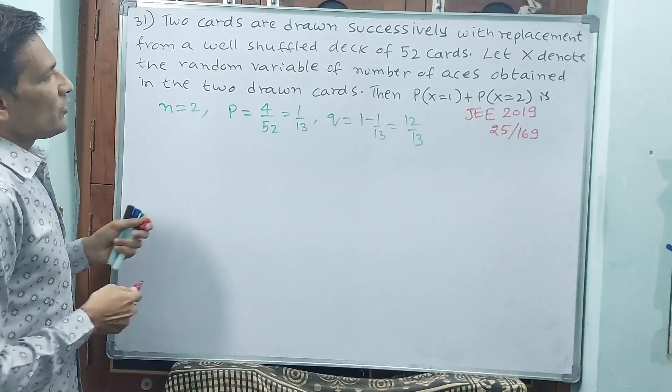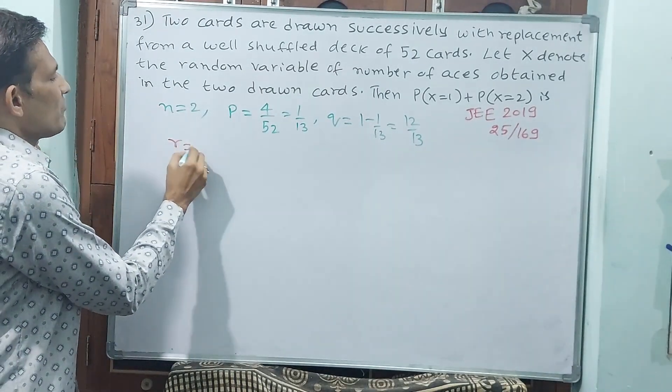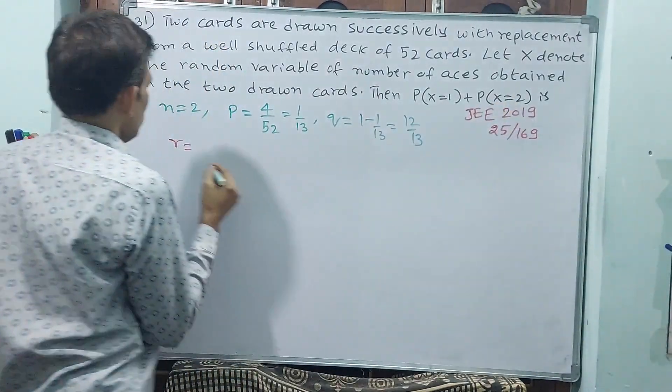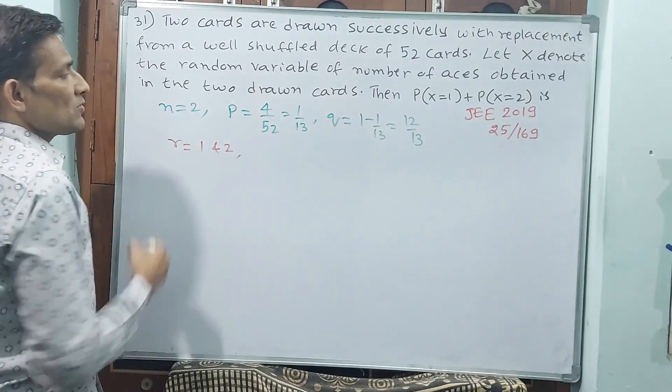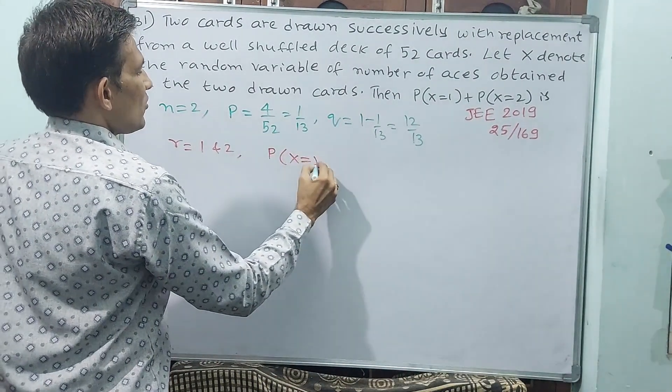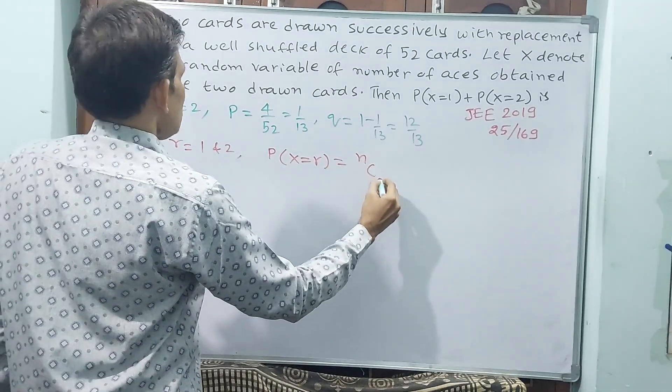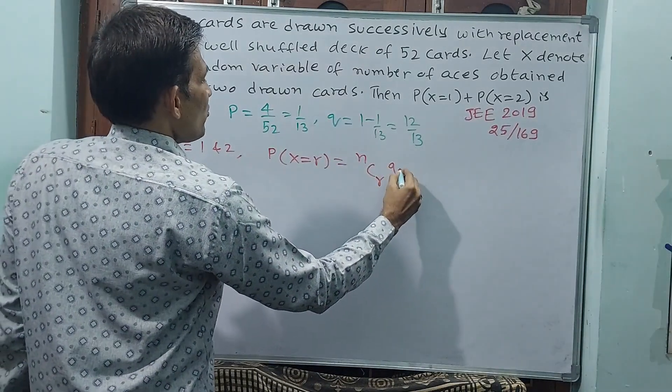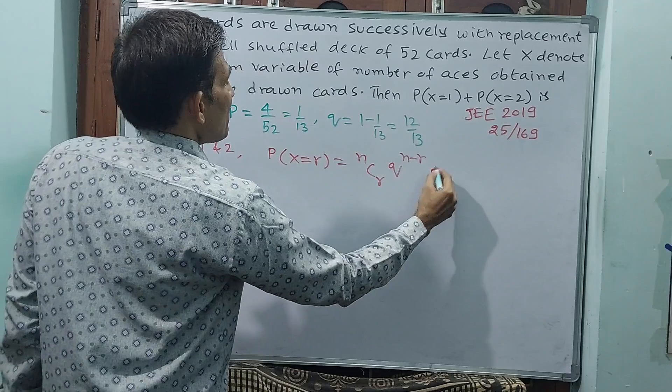But what else you require then? r you require. r equals 1, r equals 2. Now, what is the formula? P(X=r) equals nCr, q power n minus r, p power r.